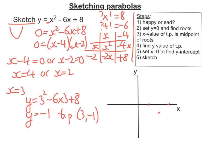Step 5, set x equals 0 to find the y-intercept, so where it crosses the y-axis. So x equals 0, that's going to be 0 squared minus 6 times 0 plus 8. And that leaves me with 8. So the y-intercept is 0, 8. Let's put that on.